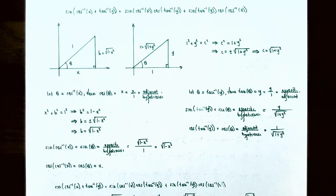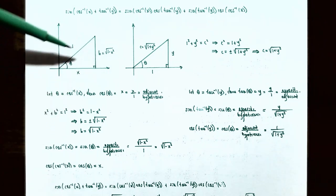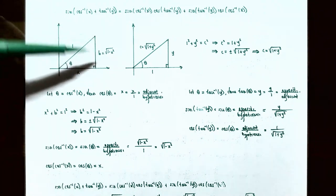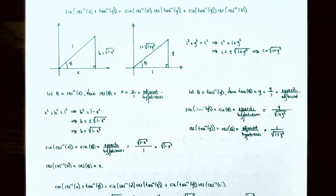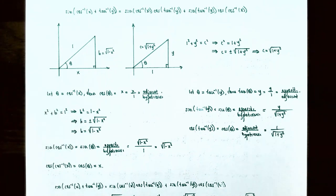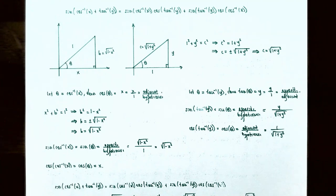To find the missing opposite side b, we use the Pythagorean theorem: x squared plus b squared equals one squared. Subtracting x squared gives b squared equals one minus x squared. Taking the square root, b equals plus or minus the square root of one minus x squared. Since b is a vertical distance in quadrant one, it's positive, so b equals the positive square root of one minus x squared.